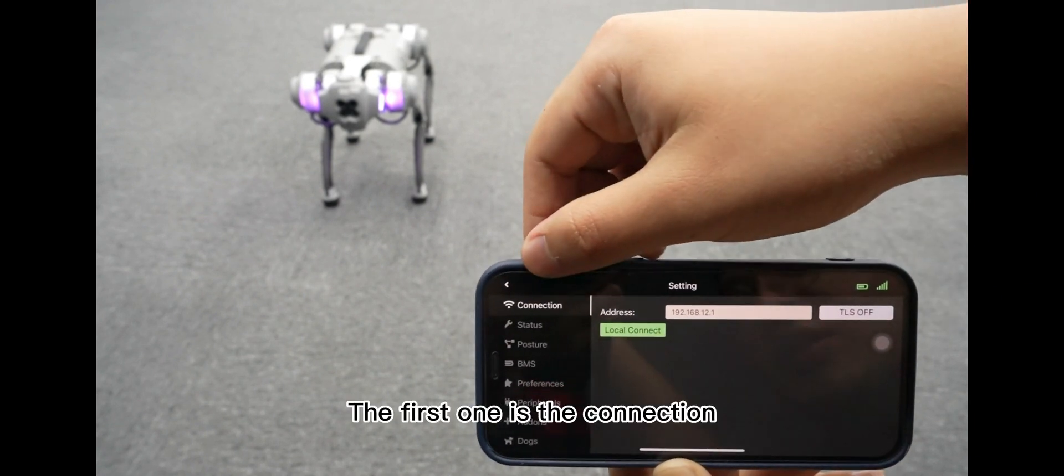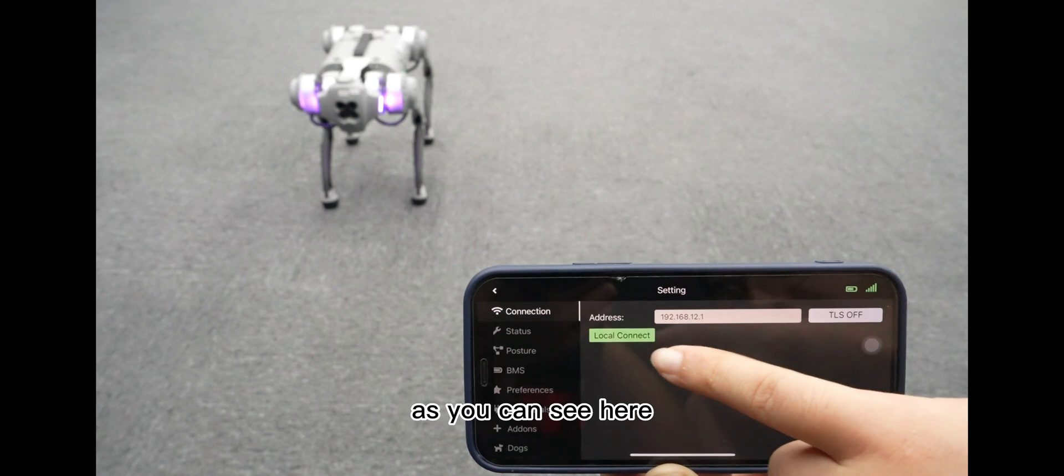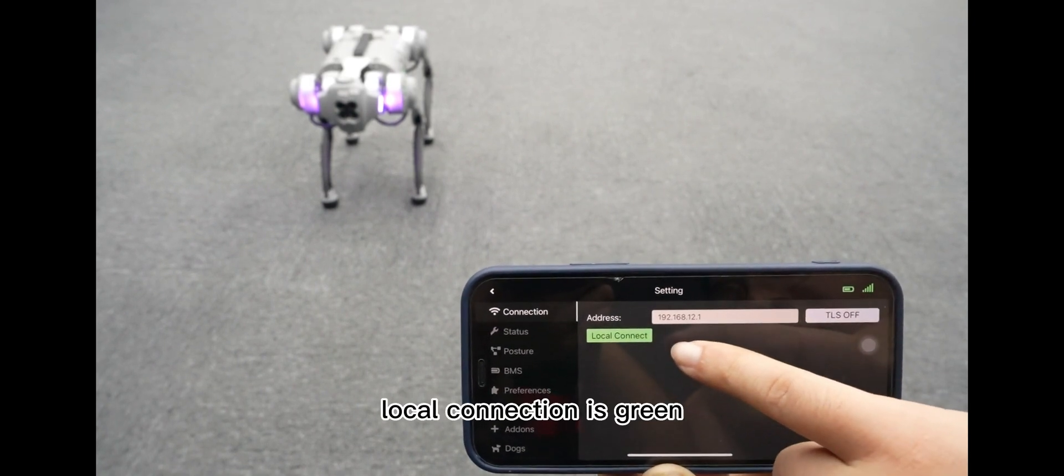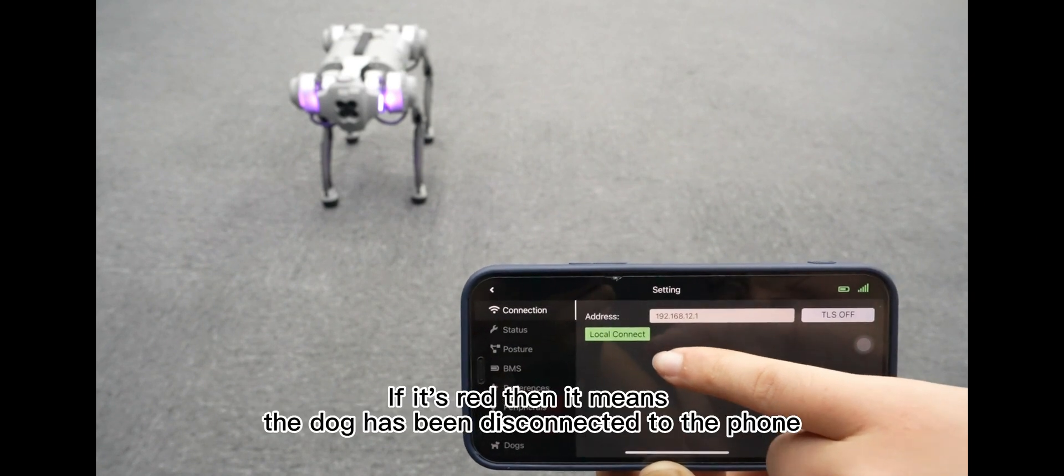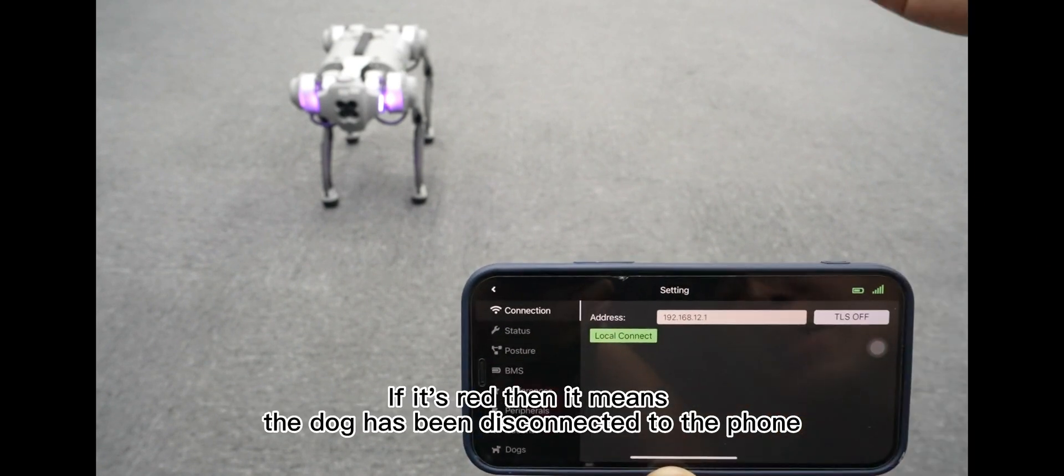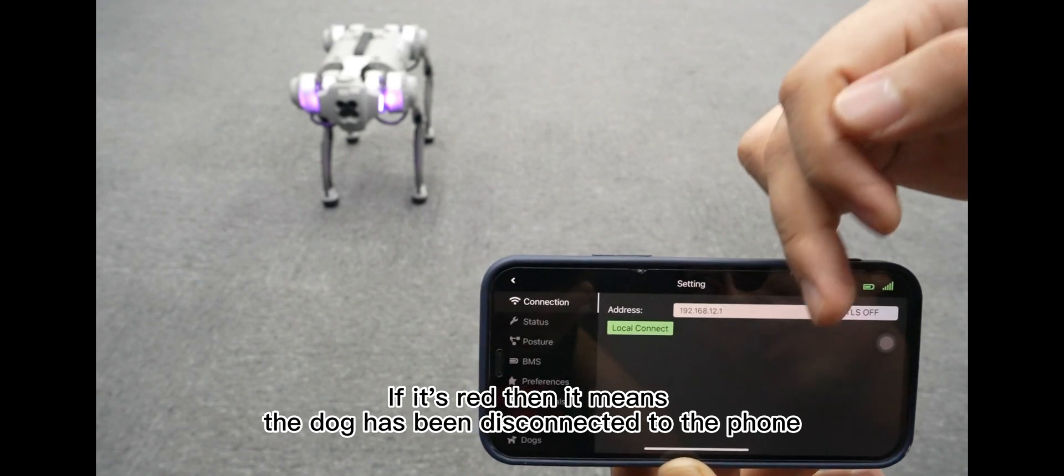The first one is the connection. As you can see here, local connection is green, so the dog and the phone are connected. If it's red, then it means the dog has been disconnected to the phone.